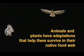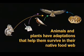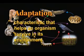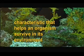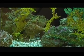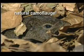Virtually all animals in a food web have adaptations that help them survive and be successful in their native food web. An adaptation is a characteristic that helps an organism survive in its environment. The frogfish is well adapted to living in the food web of the reef — its adaptation is a natural camouflage that makes it hard to spot. Some animals are adapted to blend into their environment to protect themselves from being eaten, and others blend in to surprise their prey.